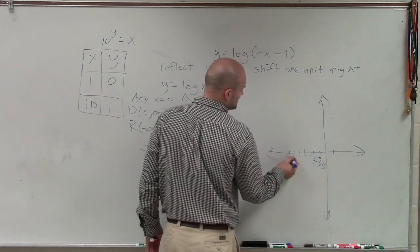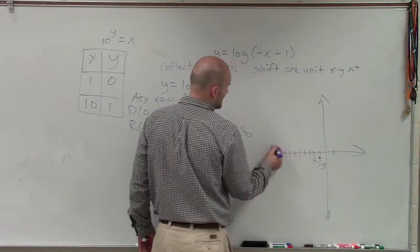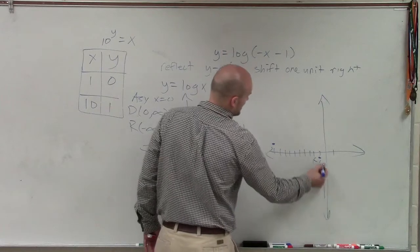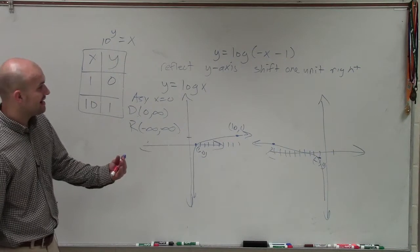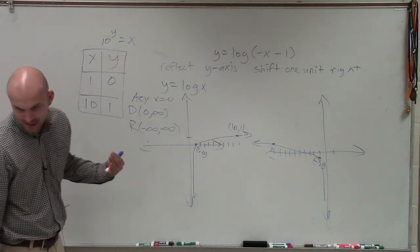And then instead of having 10 comma 1, that's now going to be at negative 10 comma 1. So now my graph is going to look something like this. Right? And then I need to shift it one more unit to the left.